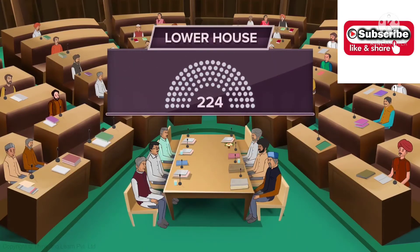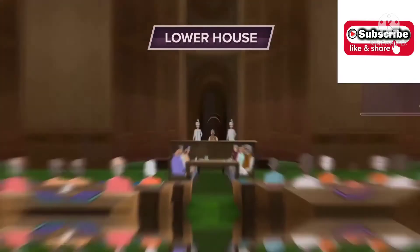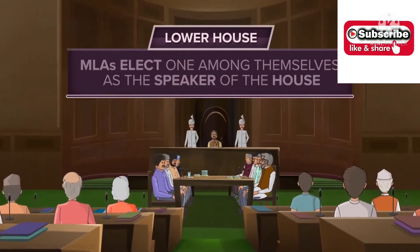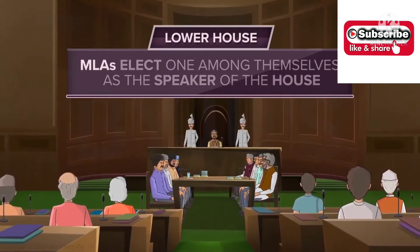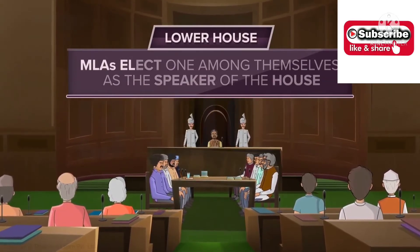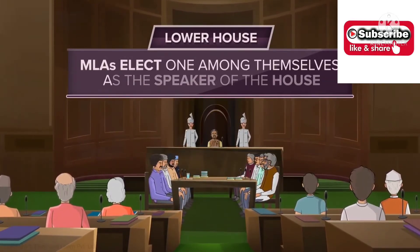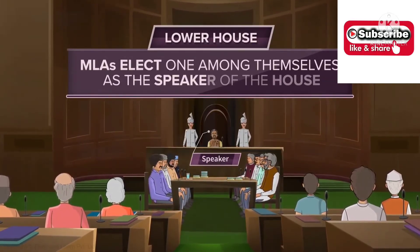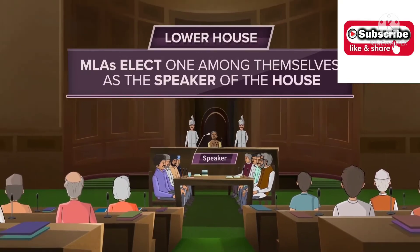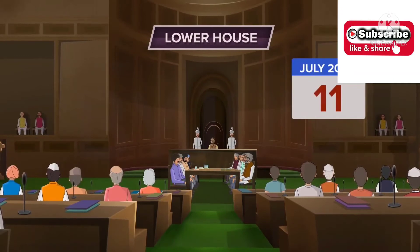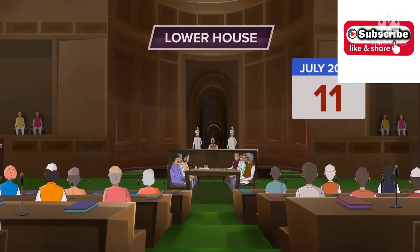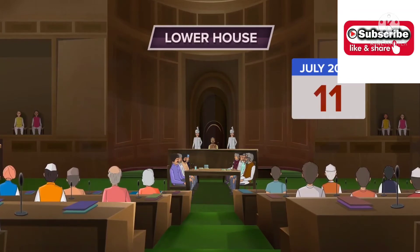The Legislative Assembly, or lower house, is the house of the elected representatives of the people. There are 224 seats in the Karnataka Legislative Assembly. The MLAs elect one amongst themselves as the Speaker of the House. The MLAs are elected for a term of five years.